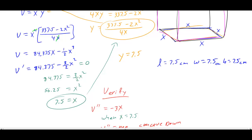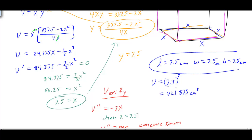If we want the maximum volume, we cube 7.5: V = 7.5³ = 421.875 cubic centimeters. So the dimensions are 7.5 cm × 7.5 cm × 7.5 cm, and the maximum volume is 421.875 cm³.